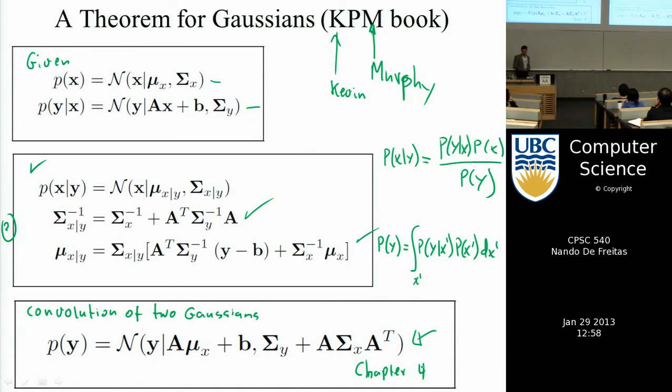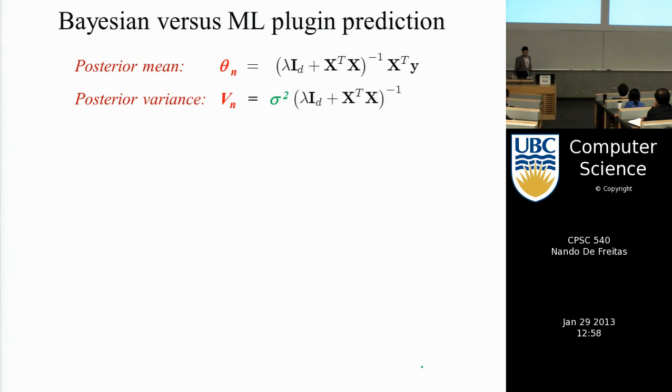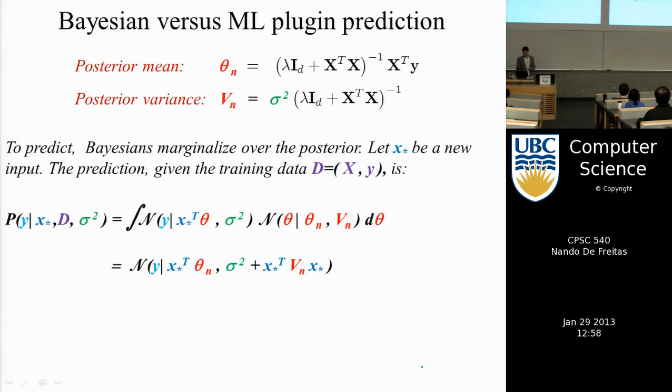Now, the reason why I'm talking about convolution is because that allows us to do prediction. So we know that we have expressions for the posterior mean and for the posterior variance we've derived. But now, if I use the expression of the multiplication of two Gaussians integrated out, that is the convolution operation, just by applying the theorem in the previous page, I get this expression for the predictive distribution.